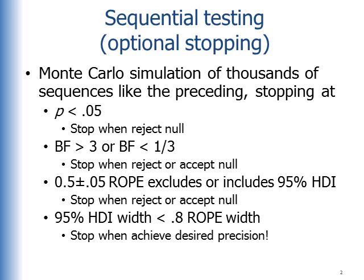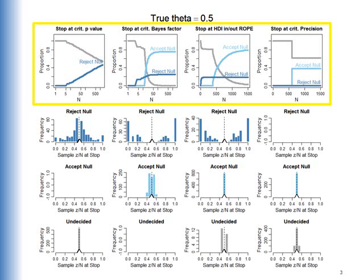Here the desired precision is 80% of the ROPE width.